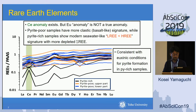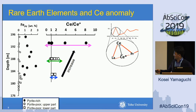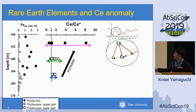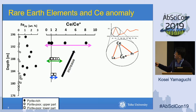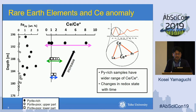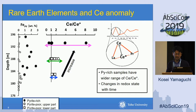Then I evaluated Ce/Ce* ratios — cerium concentration divided by the hypothetical value between lanthanum and praseodymium. In the lower sections, we have a very limited range for Ce/Ce* values, but for pyrite-poor upper samples there is a slight increase in range. For the pyrite-rich samples, we have an increase in the range of Ce/Ce* ratios. Pyrite-rich samples have a wider range, which may represent changes in redox state with time — sporadic development of euxinic water columns to form pyrite and increase cerium concentration in the water column.